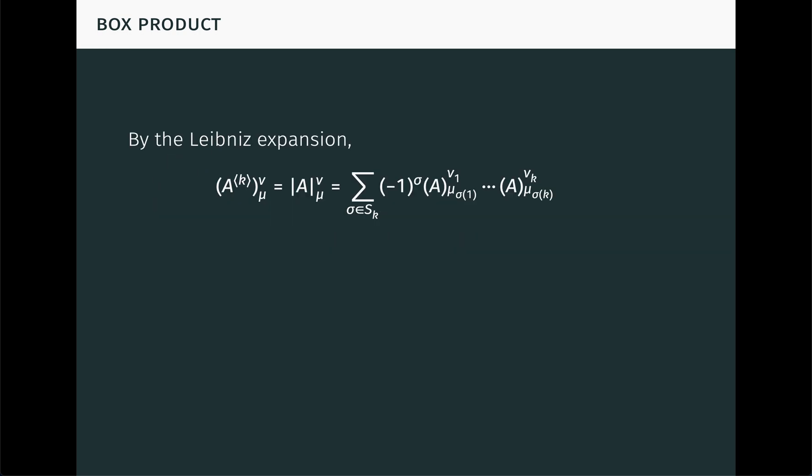To figure this out, first recall from the Leibniz expansion of the determinant that the μ,ν-th entry of A^⟨k⟩, which is just the μ,ν-th minor of A, is given by this formula. On the right-hand side here, S_k denotes the set of permutations of the numbers 1 through k, and we're summing over all permutations σ in S_k. (-1)^σ denotes the sign of σ, which is equal to +1 if σ makes an even number of transpositions, and -1 if σ makes an odd number of transpositions. In this formula, the row indices of A are being permuted while the column indices are held fixed, but we can equally permute the column indices while keeping the row indices held fixed, which looks like this.